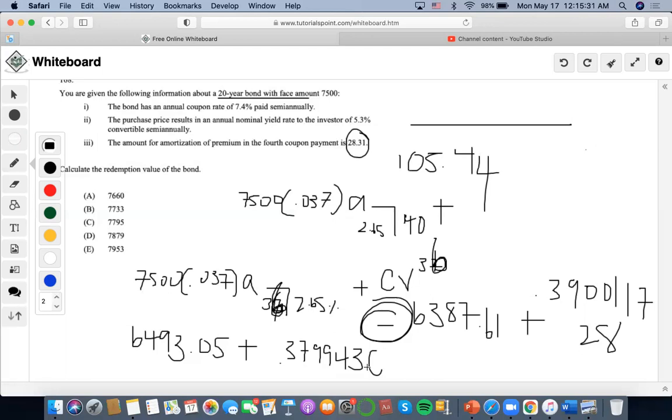And then I'm going to do 0.379943 minus 0.390117 and get negative 0.0100687.